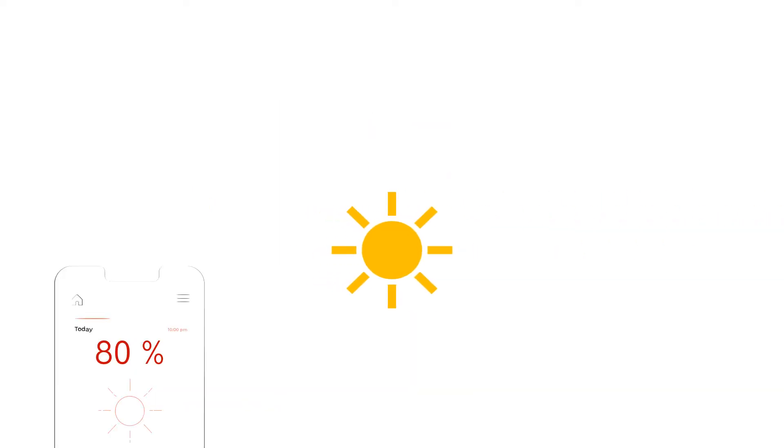Now, suppose I forecast that there's an 80% chance that it will be sunny tomorrow, and then it rains. Was I wrong? Well, I could argue that I also predicted a 20% chance that it wouldn't be sunny. So, wouldn't you agree that I was also a little bit right?